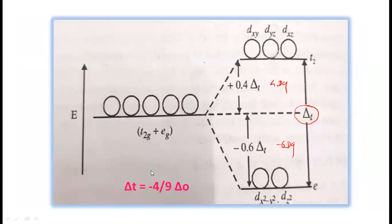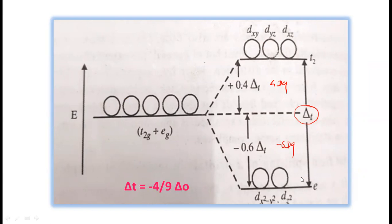In summary, in this lecture we discussed the crystal field splitting in tetrahedral complexes. The 5 d orbitals split into two energy groups: the T2 group, which has the higher energy level (dxy, dyz, dxz — nearer to ligands), and the e group, which has the lower energy level (dx²−y² and dz²). The crystal field splitting in tetrahedral complexes is the inverse of that in octahedral complexes, with Δt = (4/9)Δo.